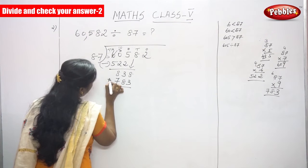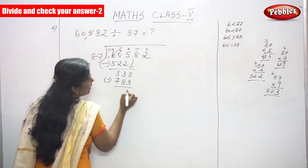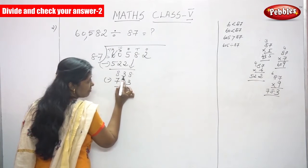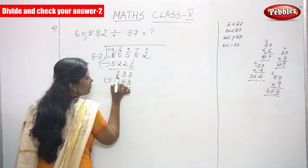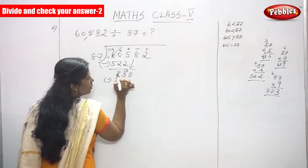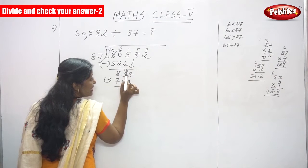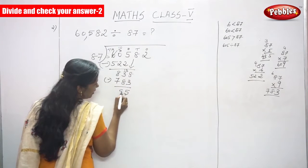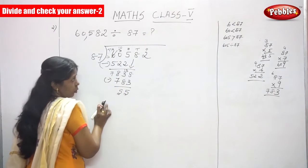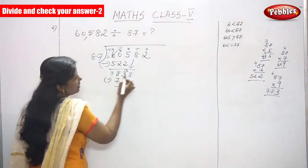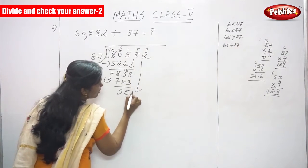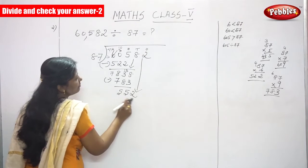Then subtract. 8 minus 3 is 5. 3 minus 8 — you can't subtract, so you have to borrow from the next digit. It becomes 13; 13 minus 8 gives 5 again. And this becomes 7, so 7 minus 7 gives 0. 55 is less than 87, so bring down the next digit, that is 2. Now we have 552.